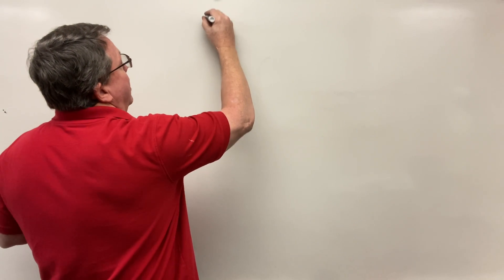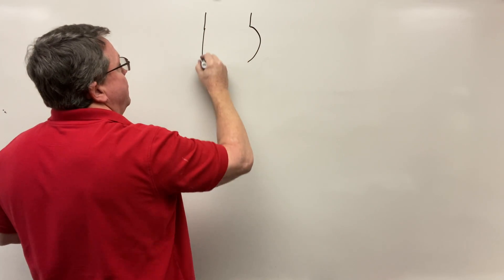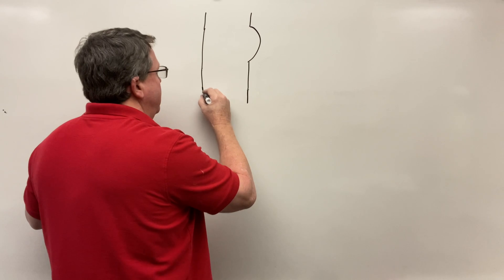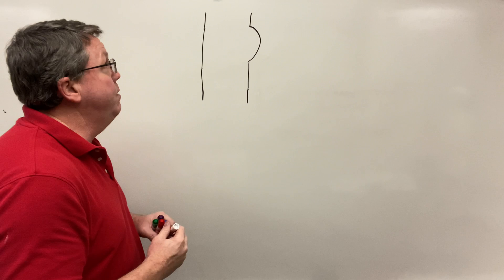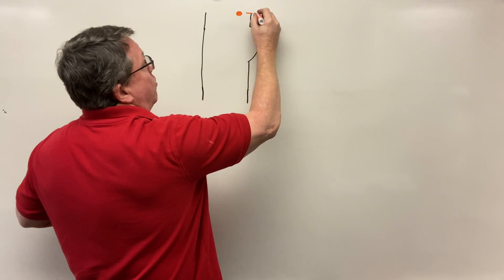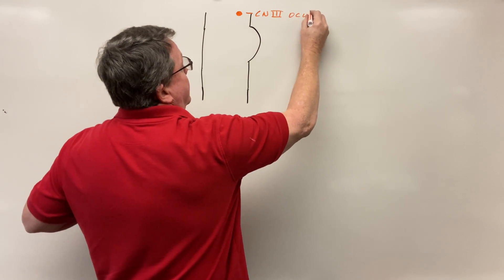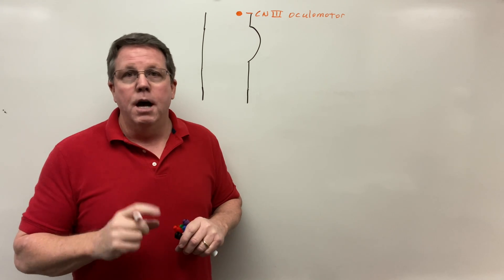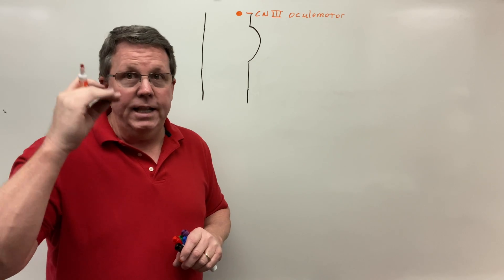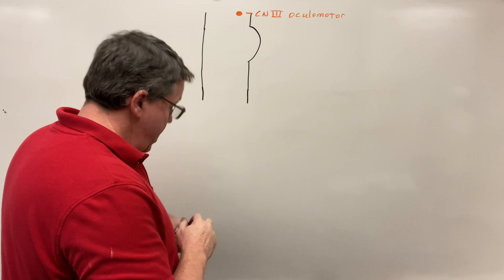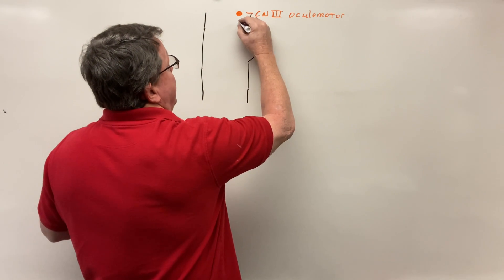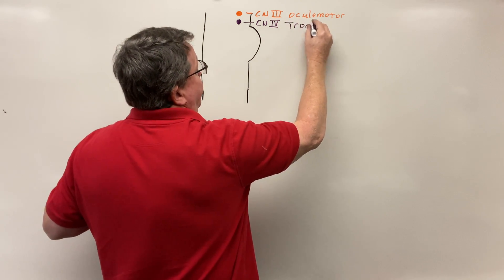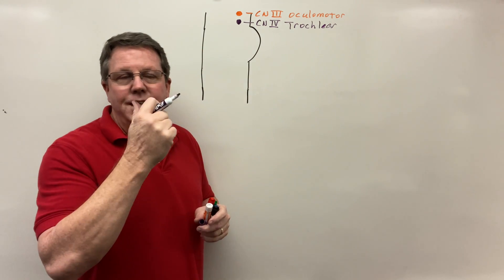I'll draw the midbrain, then the pons, then the medulla oblongata below it. In the midbrain we had cranial nerve 3, the oculomotor nerve, responsible for controlling eye movements — looking up, down, medially, up and out — as well as pupil constriction, holding open the eyelid, and near vision. Just below that in the midbrain was cranial nerve 4, the trochlear nerve, which controls the superior oblique muscle and pulls the eye down and out.